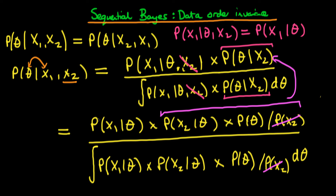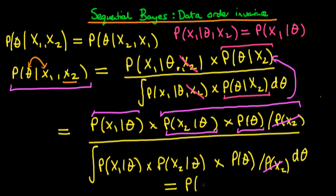We've now decomposed our posterior density into something which depends only on x1 and theta, times something which depends only on x2 and theta, times a prior which solely depends on theta — and that's the same in both the numerator and denominator. Because it's multiplicative, the order doesn't matter. Hence, by applying Bayes' rule twice — in other words, using sequential Bayes — we have shown that if x1 and x2 are independent, then the order in which we receive those two data points doesn't matter for the posterior, and hence for inference.